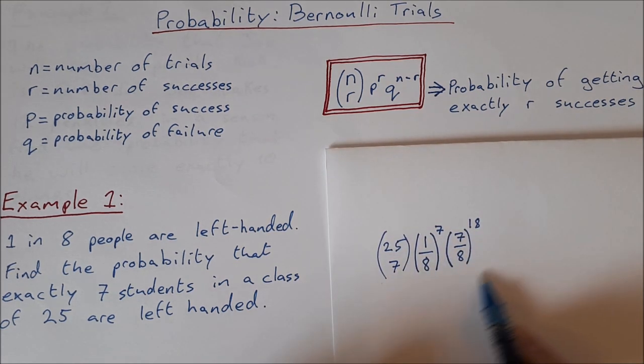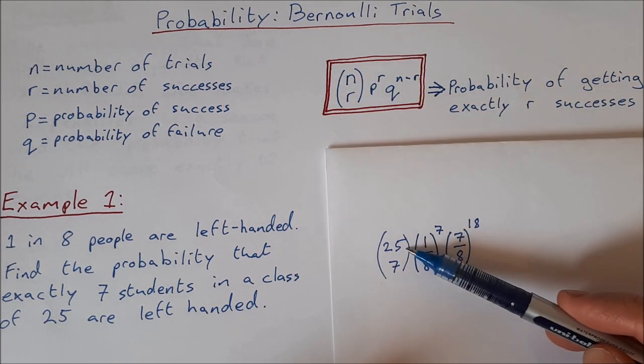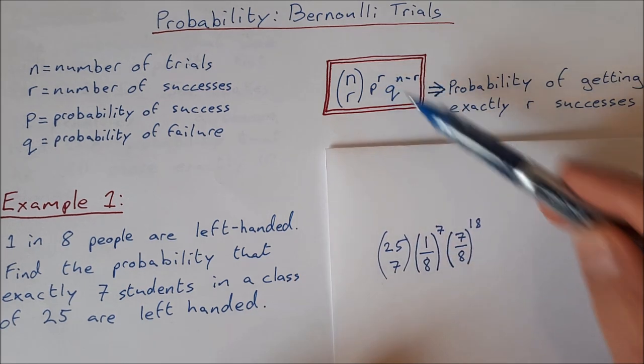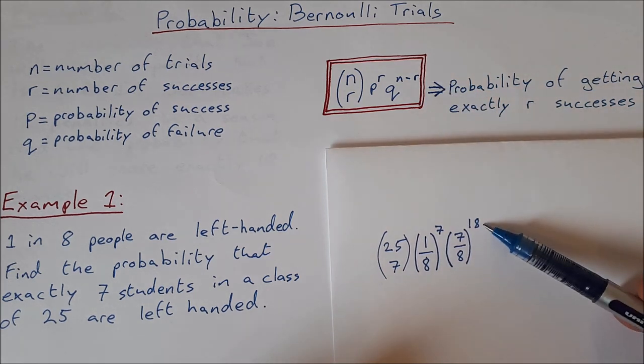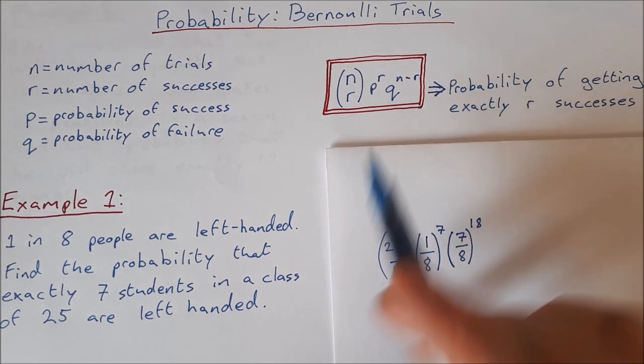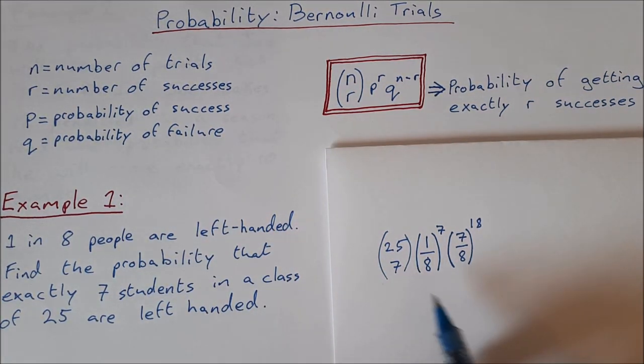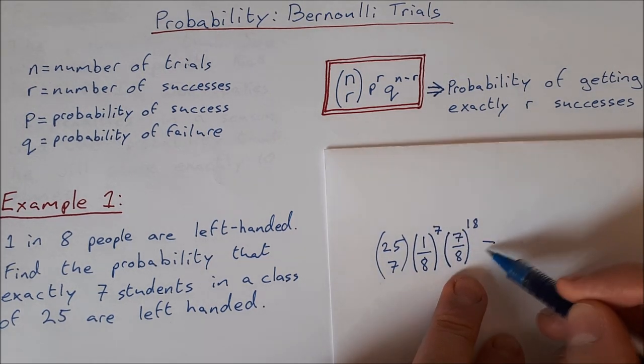And as you can see, I've made basically the formula here. So n is 25, R is 7, p is 1 over 8, R again is 7, q is 7 over 8, and n minus R is 18. So if you prefer, you can just write down the formula and write down each of these and fill them in. But this is more of a way of reasoning it out.